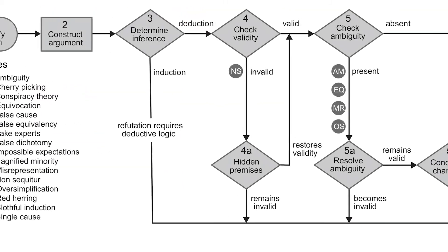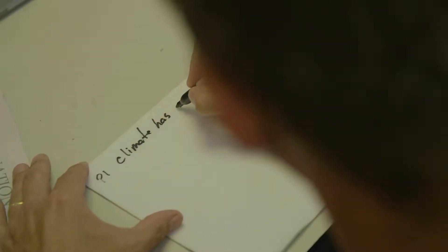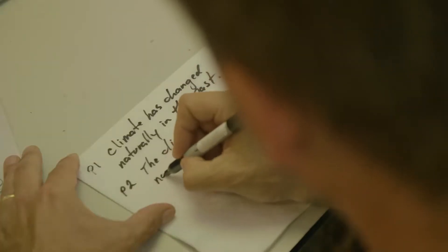While the full methodology is more complicated, I'm going to explain the three most important steps to analysing misinformation. The first step is to break up the argument into its starting assumptions or premises and its conclusion. For example, the argument you just mentioned has two premises: the first is that climate has changed naturally in the past, the second is that the climate is changing now, and the conclusion is that current climate change is natural.